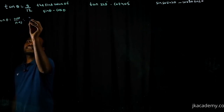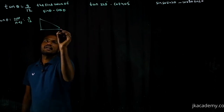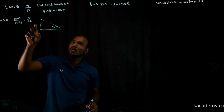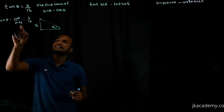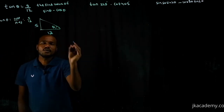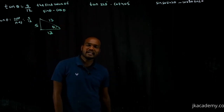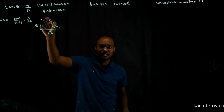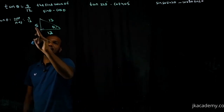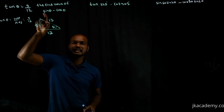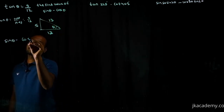Given tan θ = 5/12, if I draw a right triangle with angle θ, the opposite side is 5 and the adjacent side is 12. We know the Pythagorean triplet 5, 12, 13 — the hypotenuse is 13. Now we have to find sin θ minus cos θ.